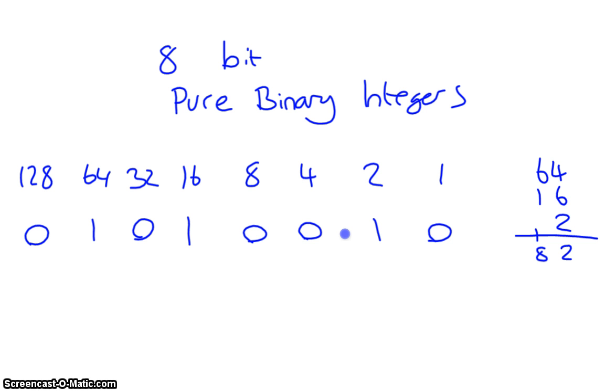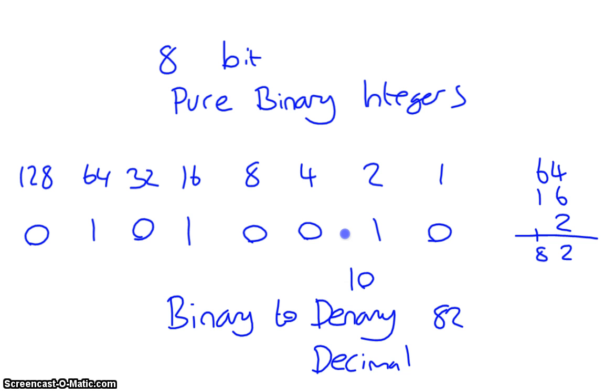So this number here from binary to denary is 82. Denary is sometimes known as decimal because it's the decimal number system. This is base 10, binary is base 2. So there's one example, let's go for one more example.